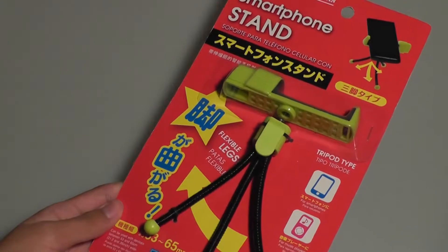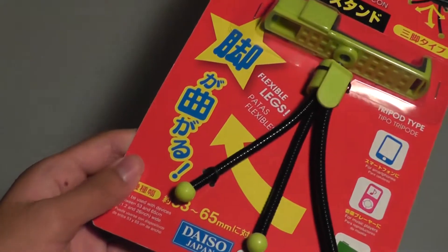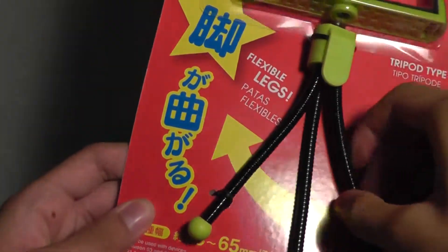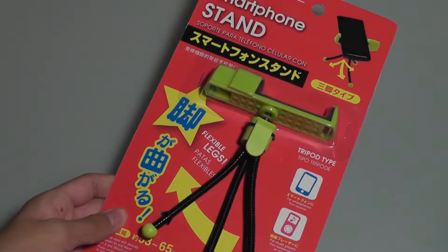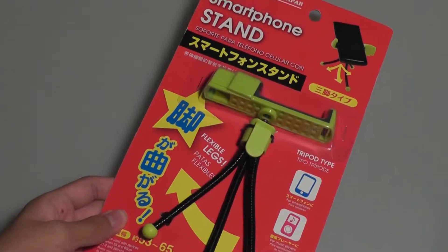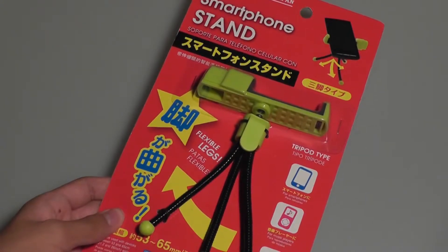This particular stand can hold any universal smartphone: iOS, Windows phone, or Android phone will work just fine. There's also metallic legs which can be twisted and bent at various angles, making it ideal for video chatting, watching videos, and using it as a tripod for taking photographs, selfies, and using the main camera to take images as well.